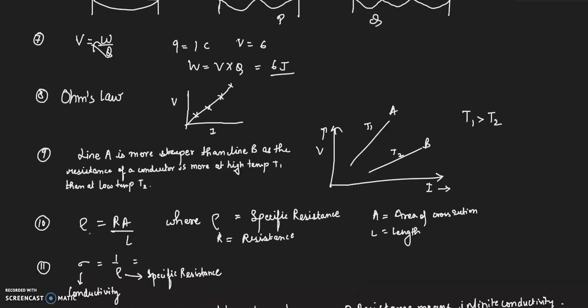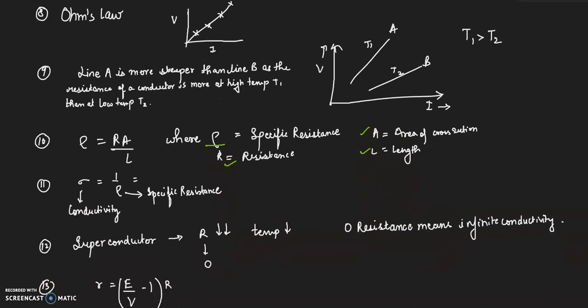This is specific resistance and the formula is ρ = RA/L, where R is the resistance, A is the area of cross section, and L is the length. You will have to learn all the units. Conductivity is a reciprocal of specific resistance.